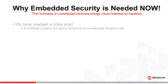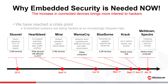Let's first talk about why embedded security is needed now more than ever. We have reached a crisis point. Embedded systems are being hacked at an increasingly frequent rate. Please note not only the increasing frequency of attacks, but the scope of these attacks — these hacks impact an enormous number of systems. Blueborn targeted over 8 billion devices, Krack targeted nearly every Wi-Fi connection, Meltdown and Spectre targeted every computer. The forecast for things to come is only worse.